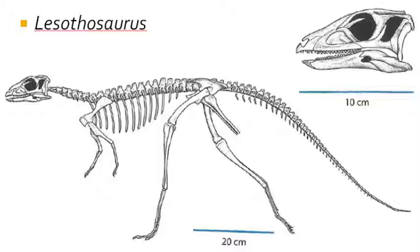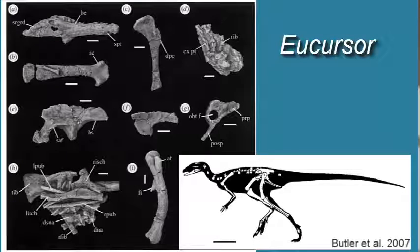Lesothosaurus is the best known earliest Ornithischian dinosaur, and it was about the size of a chicken. It was bipedal, and there are a number of nice specimens that have come from South Africa. Lesothosaurus specimens are found in the upper beds of the Elliott Formation, which is placed at the base of the Jurassic period. In the lower beds of the Elliott Formation, there is a similar chicken-sized basal Ornithischian dinosaur called Eucursor, around 200 million years ago.